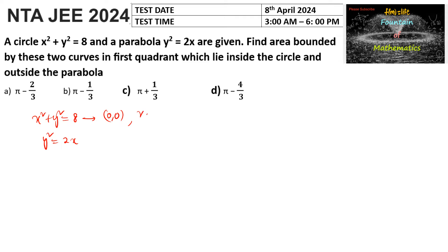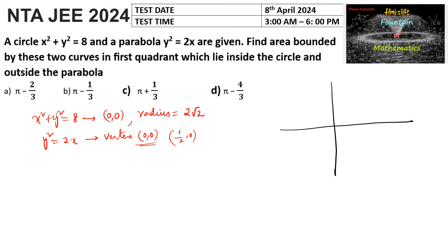The circle has center at the origin (0, 0) and radius 2√2, because (2√2)² = 8. The parabola has its vertex at the origin and focus at (1/2, 0). We can get the diagram: a circle with center origin and radius 2√2, and the parabola y² = 2x.